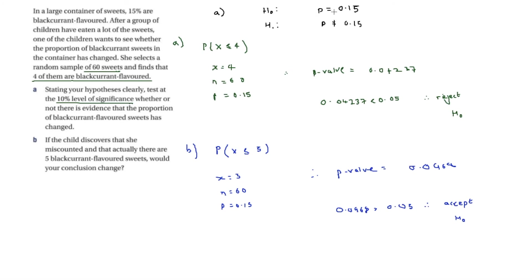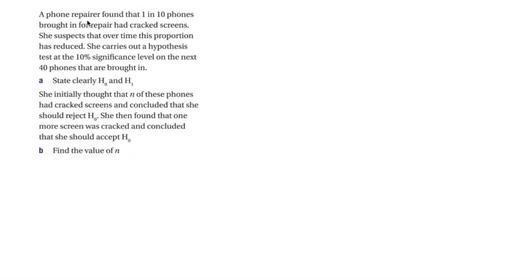The final question: a phone repairer found that one in 10 phones brought in for repair had cracked screens. She suspects this proportion has reduced over time. She carries out a hypothesis test at the 10% significance level on the next 40 phones. H0: p = 0.1. H1: p < 0.1 — a one-tailed test. Here p is the probability of a phone brought in for repair having a cracked screen.